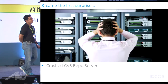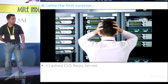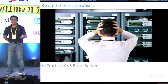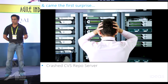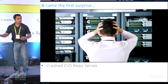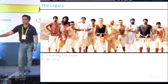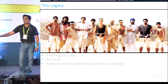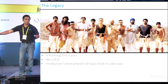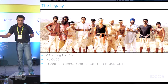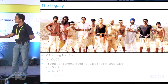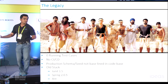The CVS server had crashed. We recovered the code base from backup and put it into SVN, since other products were already in SVN. Then we saw our legacy state: zero running test cases, no CI/CD, no production schema checked in — a bunch of scripts were missing so we couldn't even build the database. Seed data was not in good shape. The tech stack was JUnit 1.5, Spring 2.0, and ANT.